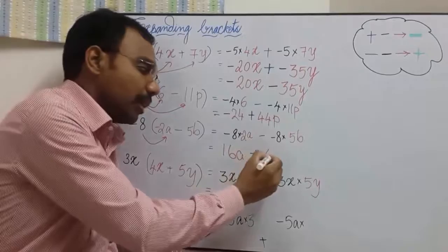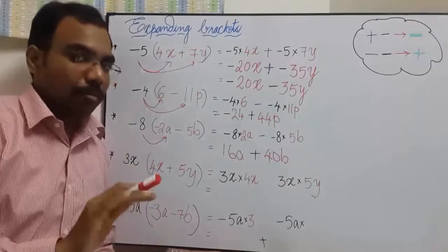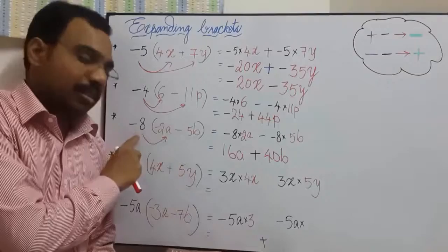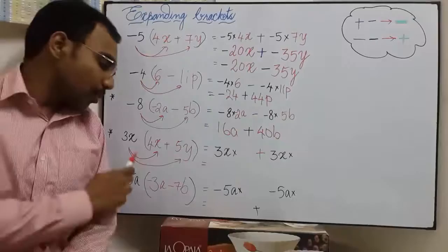So when you are multiplying with a negative number, please be careful. In this, both are negative terms. And since they are being multiplied with a negative number, both became positive. Let us do one more example involving variables.